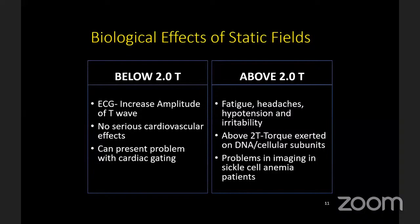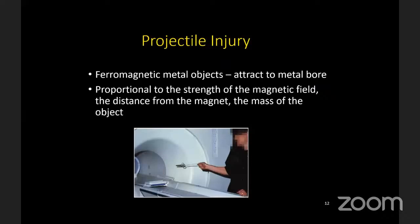The effects of the static magnetic field causing safety issues are due to the attraction of ferromagnetic material towards the magnet, which can cause projectile injuries or biological changes. If the magnetic field strength is less, there are no serious cardiovascular effects, though there may be a mild increase in T-wave amplitude. But above 2 Tesla, there have been reports of fatigue, headaches, hypertension, irritability, and problems in imaging sickle cell anemia patients. Projectile injuries are proportional to the field strength, the distance from the magnet, and the mass of the object.